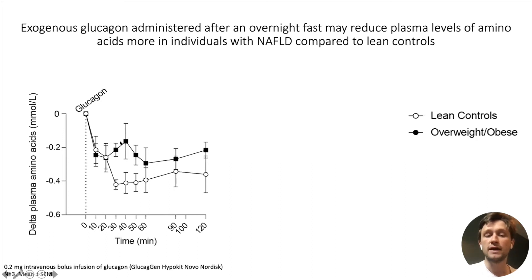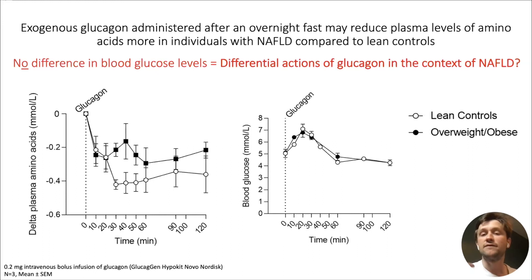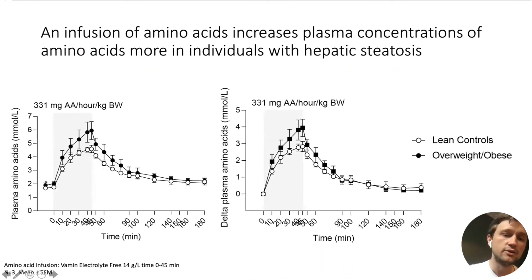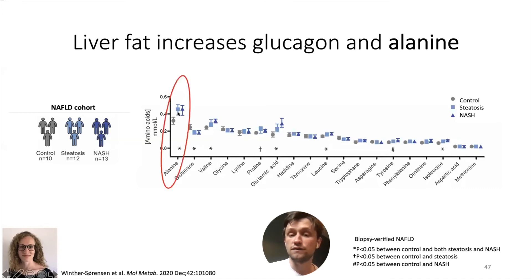The black curve represents patients with fatty liver disease and the white curve healthy controls. Importantly, the effect on glucose levels — in other words hepatic glucose production — is not different, as you can see in the plot to the right. At least in our minds, this suggests there might be differential or biased actions of glucagon in the context of NAFLD. Also, if we infuse amino acids, plasma amino acid concentration is significantly increased in obese individuals compared to lean. Going back to Marie's work, she also showed in our NAFLD cohort — with all liver biopsy-verified patients — that steatosis is sufficient to disrupt alanine levels.